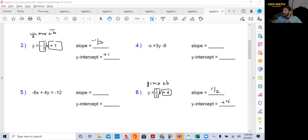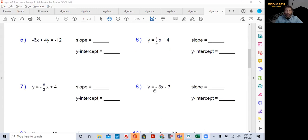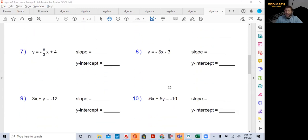That easy. Y equal mx plus b. You should commit that to memory. Y equal mx plus b. Slope-intercept form. Y equal mx plus b. My slope is negative three. My y-intercept is negative three. That easy.